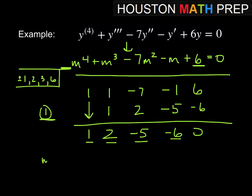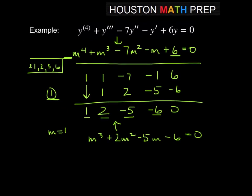So in other words, m is equal to 1. And then what this gives us here is that m cubed plus 2m squared minus 5m minus 6 equals 0 is what we have left over. So if you're hopefully somewhat familiar with that, or this is just kind of a refresher for you, I guess.